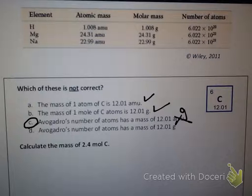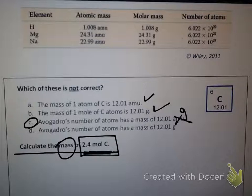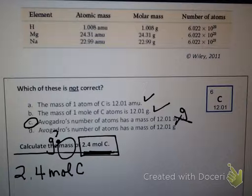Now let's do a calculation. Calculate the mass of 2.4 moles of carbon. Mass can have two different units: amu or grams. We're given 2.4 moles of carbon — do we have an atom of carbon? No, we have moles of carbon. When you have moles of carbon atoms you're going to use the gram unit. So we actually want the mass in grams. We're given 2.4 moles of carbon atoms and we'll use a conversion to calculate the mass.